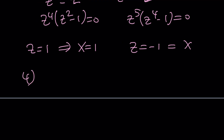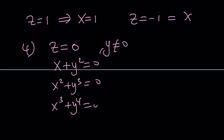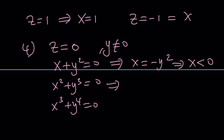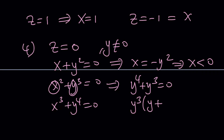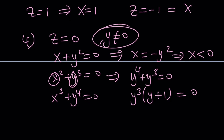Case number four: z equals zero and y does not equal zero. In this case we get x plus y squared equals zero, x squared plus y cubed equals zero, and x cubed plus y to the fourth equals zero. The first equation gives us x equals negative y squared, so x is less than zero since y squared is always positive. Substituting into the second equation gives y to the fourth plus y cubed equals zero, which factors as y cubed times (y plus one) equals zero. Since y cannot be zero, y must equal negative one.